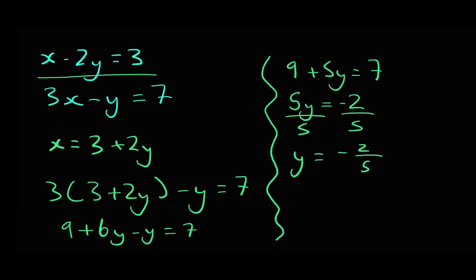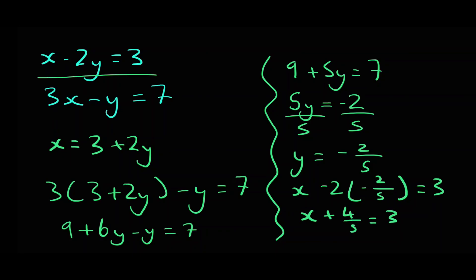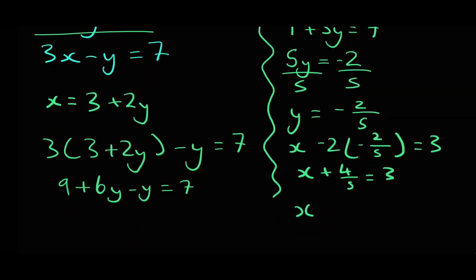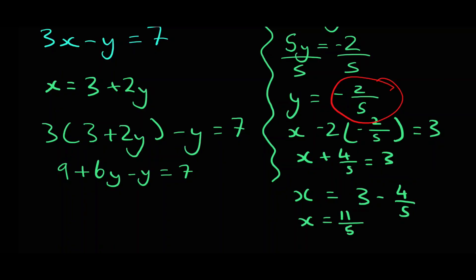Now I can substitute y into the first equation. So x minus 2 times negative 2 over 5 equals 3, which means x plus 4 over 5 equals 3. So x equals 3 minus 4 over 5, which means x equals 11 over 5. So y equals negative 2 over 5 and x equals 11 over 5. And that's how you solve simultaneous equations using elimination and substitution. Thanks for watching.